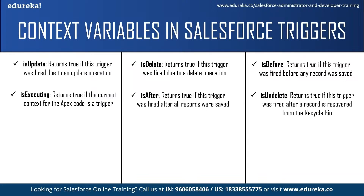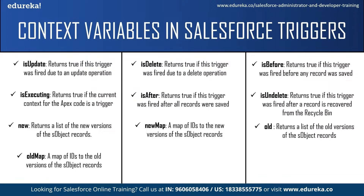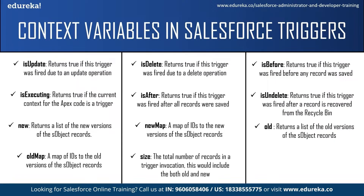Next is isUndeleted — this returns true if the trigger was fired after a record was recovered from the recycle bin. Then we have the 'new' context variable — this returns a list of new versions of the Salesforce object records, available in insert, update, and undelete triggers, and records can only be modified in before triggers. 'newMap' is a map of IDs to the new version of the S object records, available in before update, after insert, after update, and after undelete triggers. 'old' returns a list of old versions of the S object records, available only in update and delete triggers. 'oldMap' is a map of IDs to old versions, also available in update and delete triggers. Finally, 'size' returns the total number of records in a trigger invocation, including both old and new.